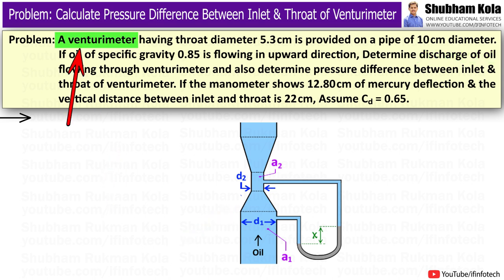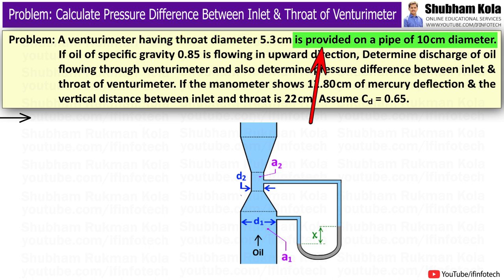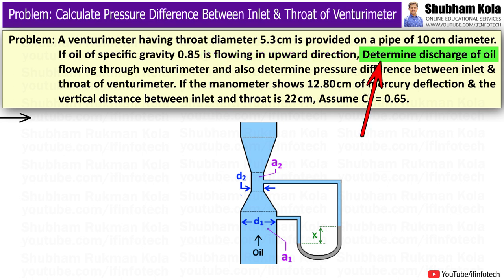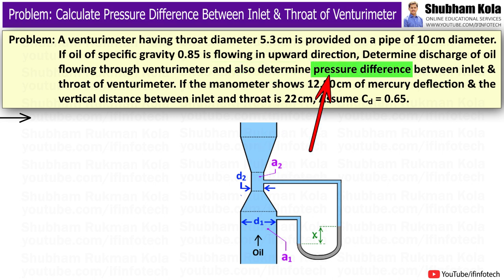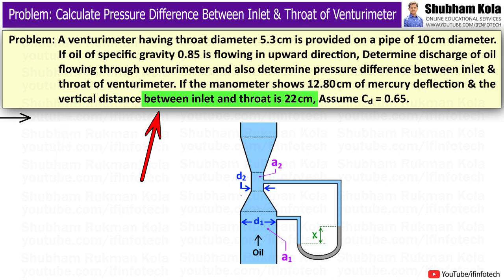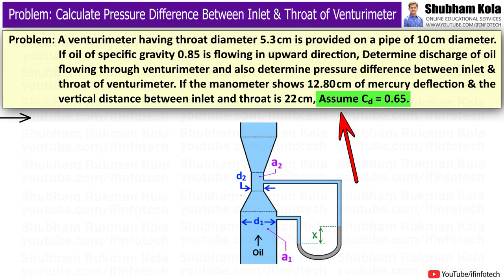The problem statement is: a Venturimeter having a throat diameter of 5.3 cm is provided on a pipe of 10 cm diameter. If oil of specific gravity 0.85 is flowing in the upward direction, determine the discharge of oil flowing through the Venturimeter, and also determine the pressure difference between the inlet and throat. The manometer shows 12.80 cm of mercury deflection, the vertical distance between inlet and throat is 22 cm, and CD is equal to 0.65.